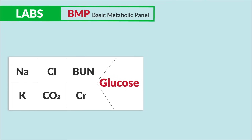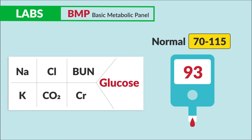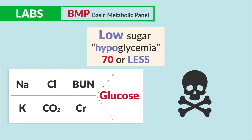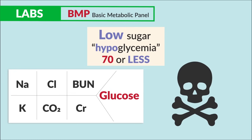Glucose is our sugar reading. If it's really high, we have hyperglycemia, typically for clients with uncontrolled diabetes. If it's low, we have hypoglycemia, which is very deadly since the brain might die — clients can slip into a diabetic coma, typically from missing a meal or having too much insulin.